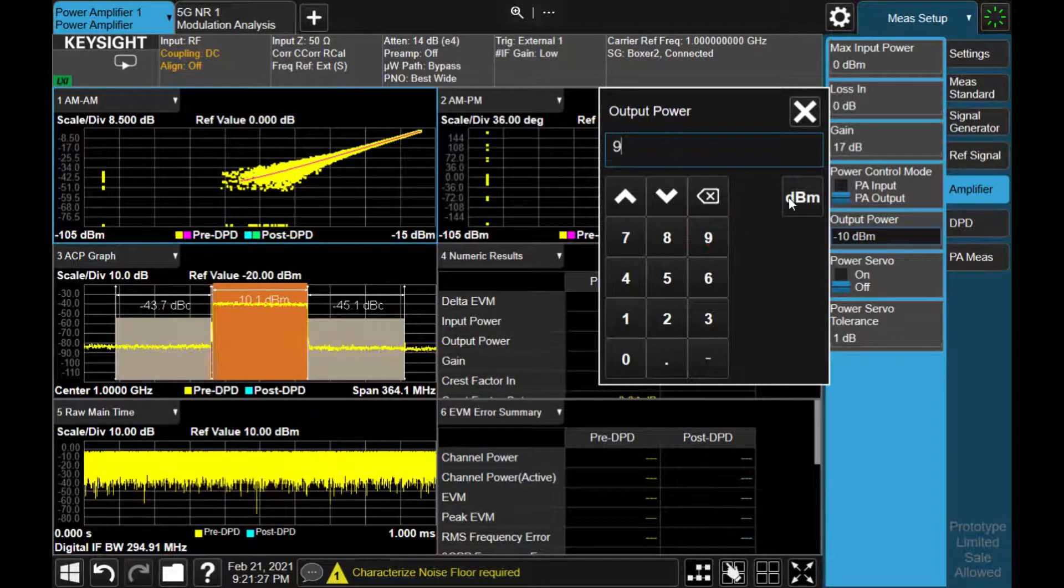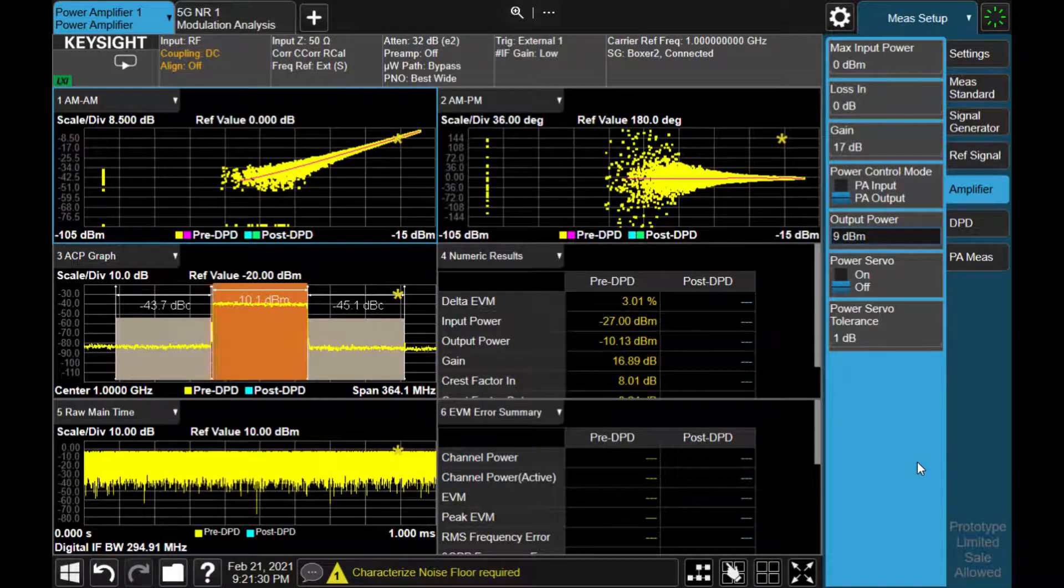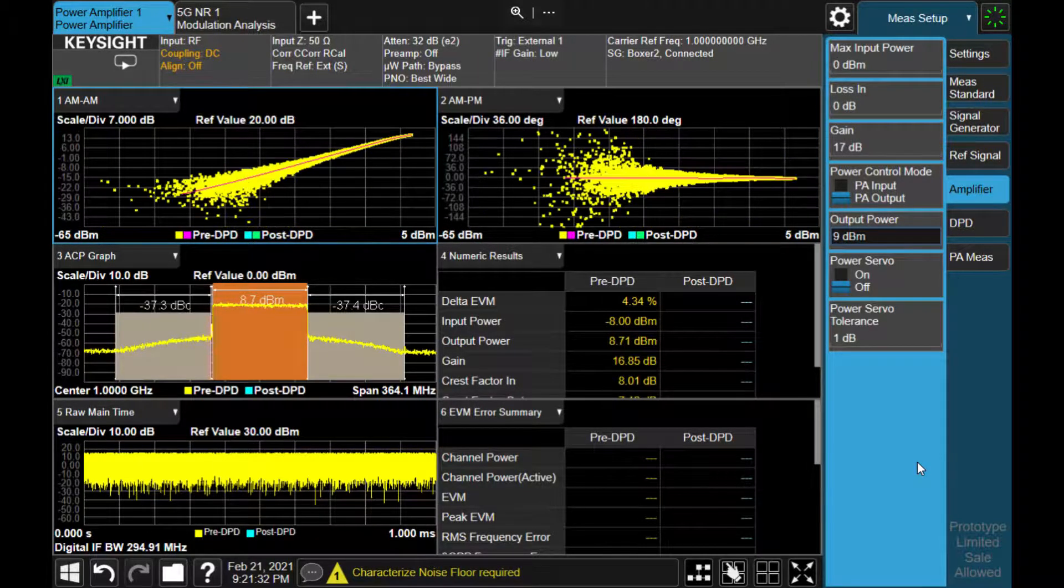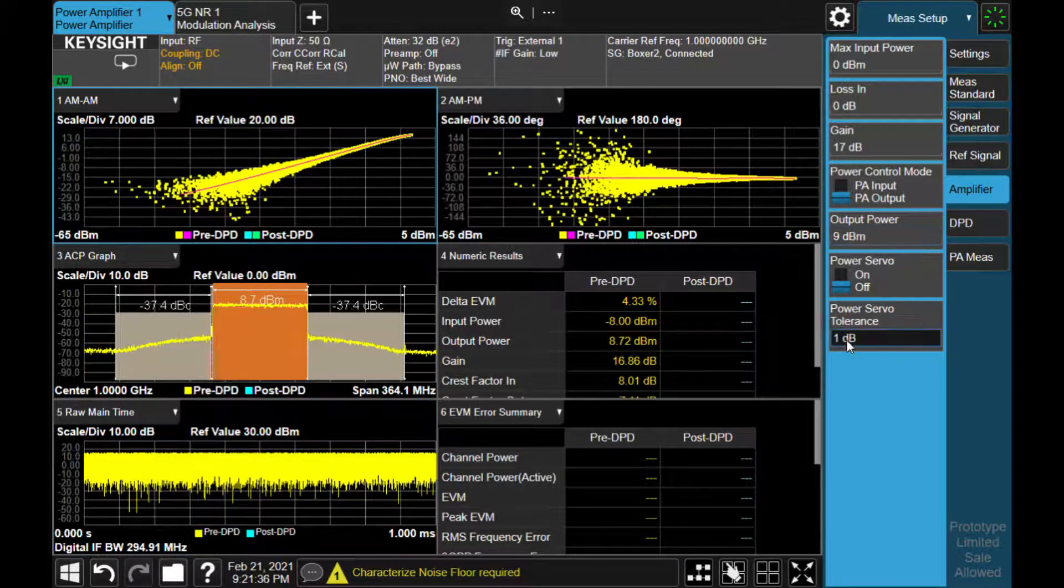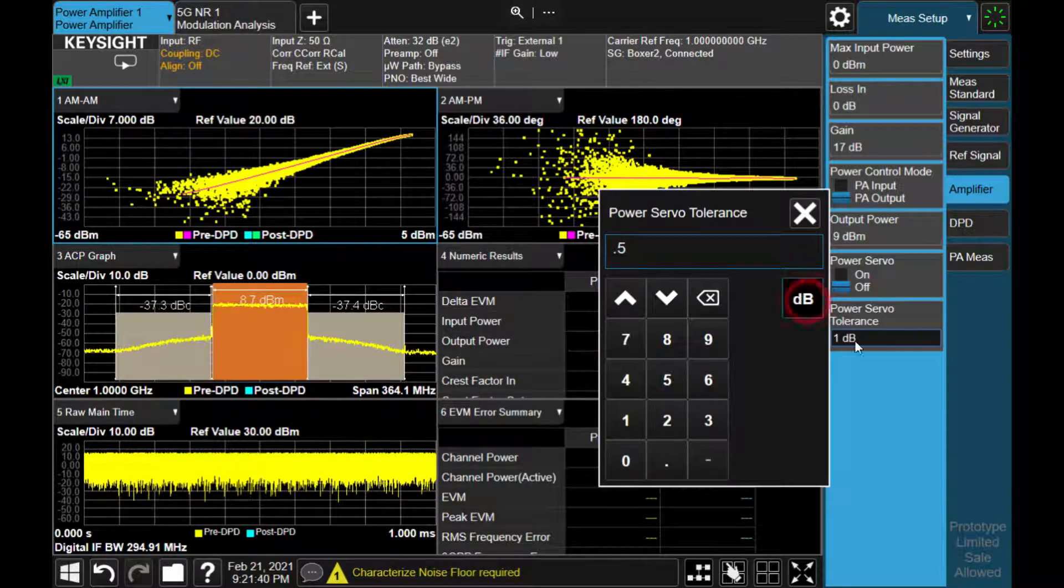And now we increase the power, PA output power to plus 9 dB. And now we have a little bit worse ACP, the increased noise level in the adjacent channel.